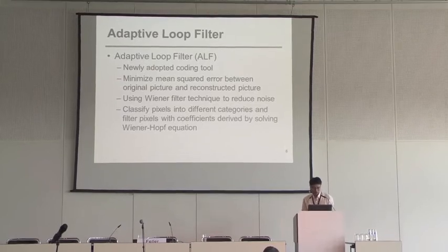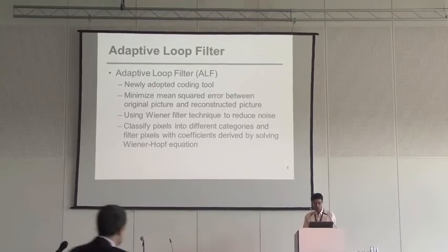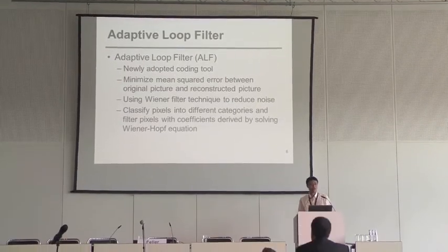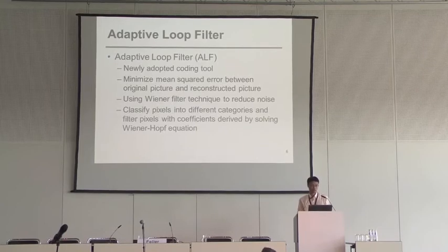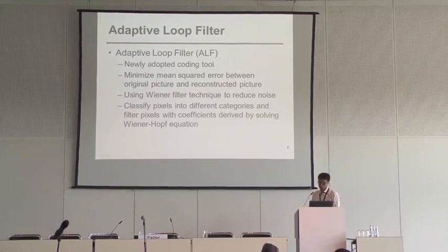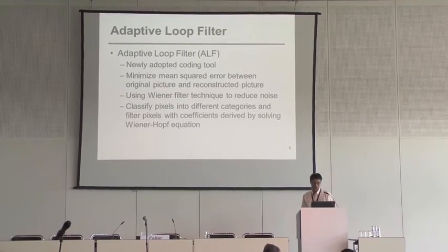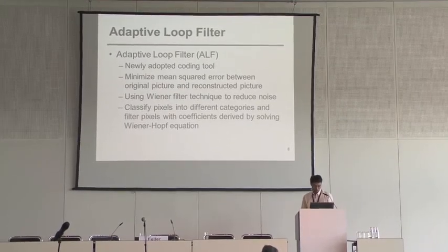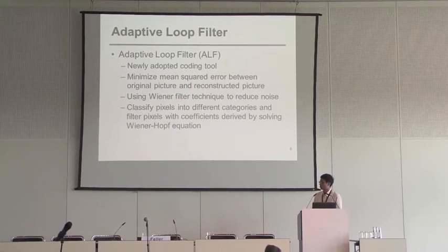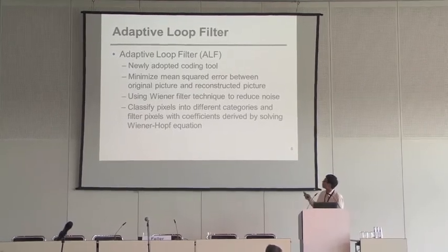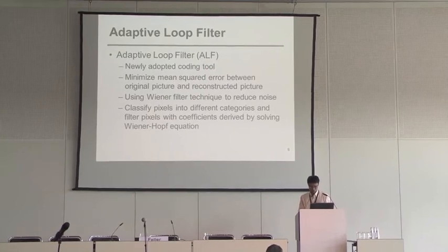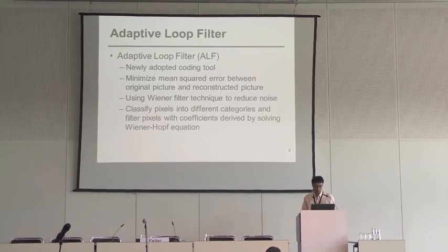The goal of adaptive filter is to minimize the mean square error between the original picture and the reconstructed pictures. It uses Wiener filter techniques to reduce artifacts produced by other coding tools.